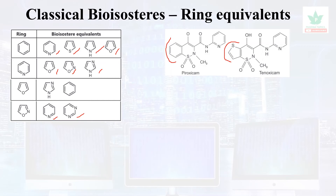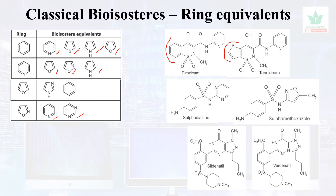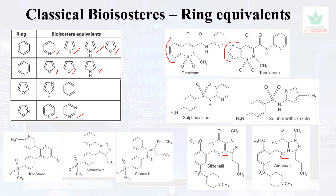For example, in piroxicam and tenoxicam, the benzene ring is replaced with a thiophene ring, giving rise to the long-acting compound tenoxicam. In sulfadiazine and sulfamethoxazole, both have antibacterial activity but sulfamethoxazole can be used orally. In sildenafil and vardenafil, introduction of a nitrogen gave rise to the more potent vardenafil. Other classical ring equivalence examples include etoricoxib, valdecoxib, and celecoxib, where benzene is replaced with pyridine and imidazole groups.